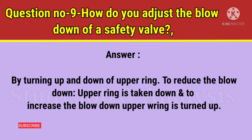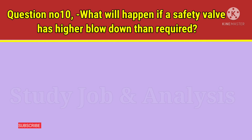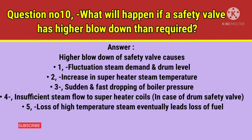Question number 10: What will happen if a safety valve has higher blowdown than required? Answer: Higher blowdown of a safety valve causes: 1. Fluctuation in steam demand and drum level. 2. Increase in superheater steam temperature. 3. Sudden and fast dropping of boiler pressure. 4. Insufficient steam flow to superheater coils in case of drum safety valve. 5. Loss of high temperature steam, which eventually leads to loss of fuel.